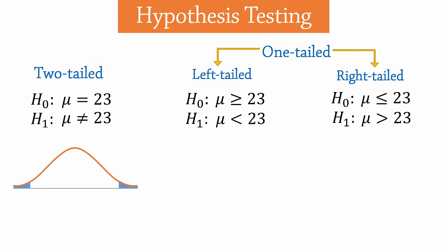For a two-tailed test, alpha is divided by 2 into both tails. So we reject the null hypothesis in the tails and we don't reject it in the middle here.